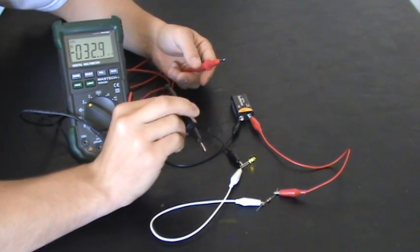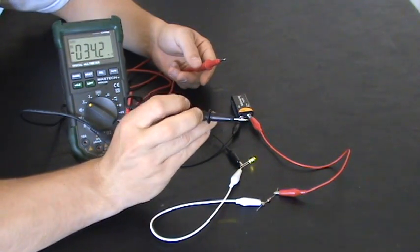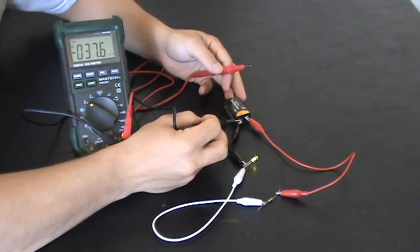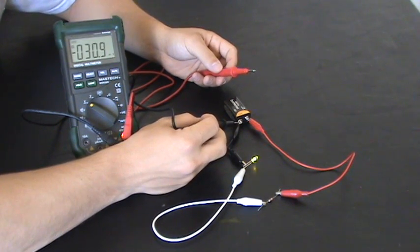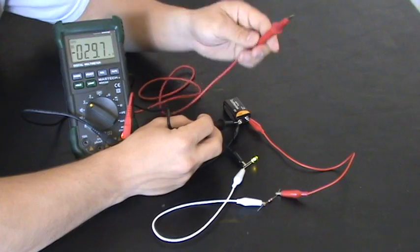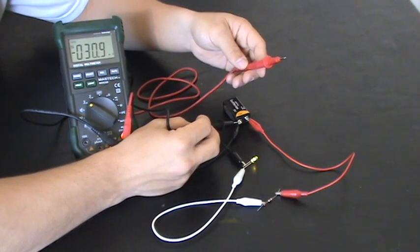The next thing you want to do is take your black lead from your multimeter right here and touch it to the black end of the terminal from your battery. This is going to stay here the whole time. The only part you move around is this red one.